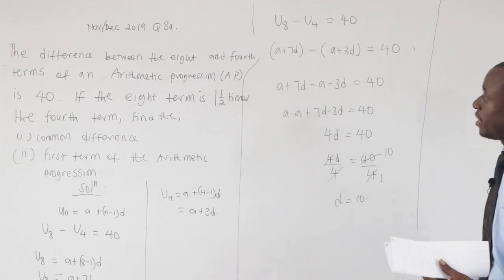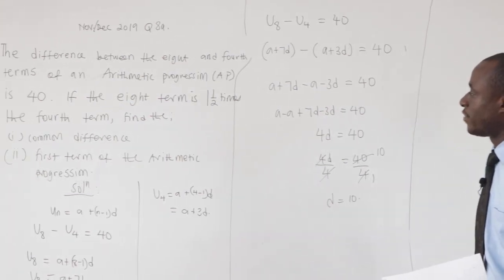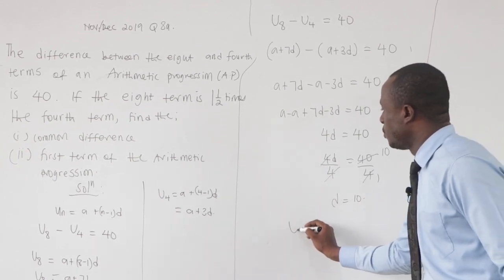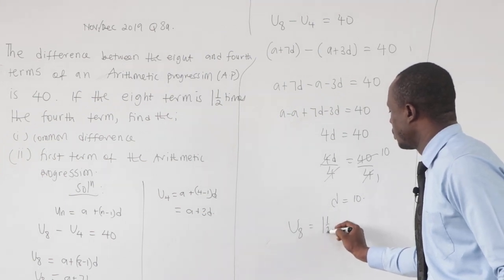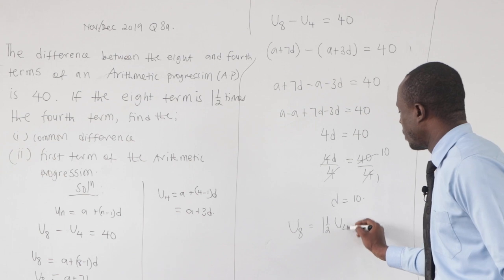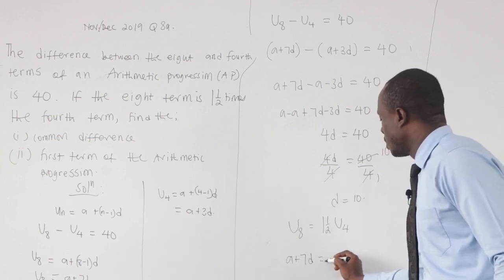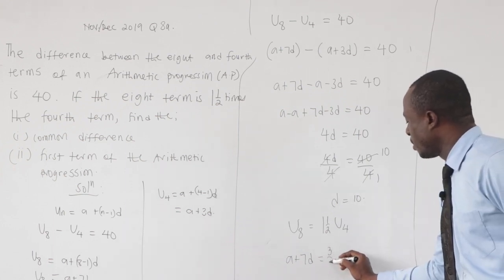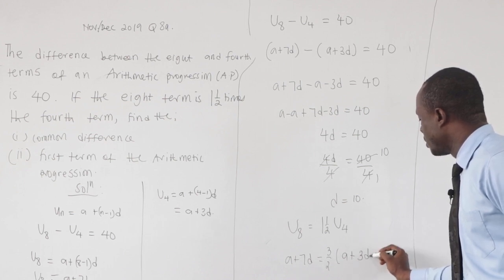Now the question went on further to say that if the 8th term is 1½ times the 4th term, we should find the common difference and then the first term. So my u_8 is 3/2 times u_4. This is a + 7d = (3/2)(a + 3d).